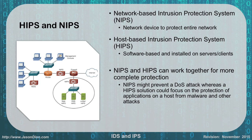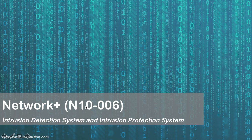As you can see in the diagram, we have several NIPSs protecting the network. We have one protecting this group, a network IDS logging all information going to this particular set, a NIPS protecting the area coming in from the internet, and HIPSs — host-based protection systems — on our web, DNS, and email servers. And that is the intrusion detection and intrusion protection systems overview.